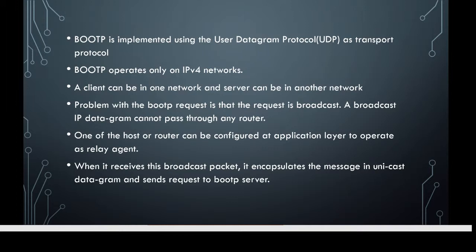One of the hosts or routers can be configured at the application layer to operate as a relay agent. When it receives this broadcast packet, it encapsulates the message in a unicast datagram and sends the request to the BootP server. The packet carrying a unicast destination address is routed by any router and reaches the BootP server. The relay agent, after receiving the reply, sends it to the BootP client.